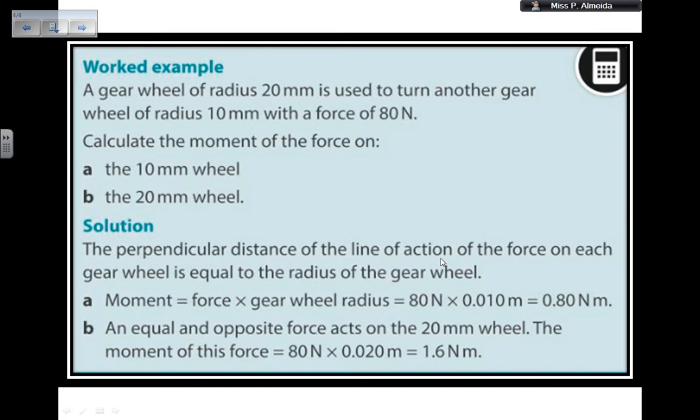A gear wheel of radius 20 mm is used to turn another gear wheel of radius 10 mm with a force of 80 newtons. Calculate the moment of the force on the 10 mm wheel and on the 20 mm wheel.